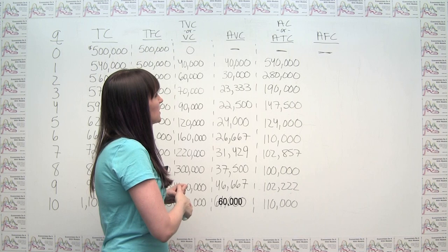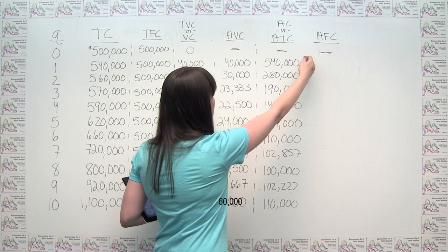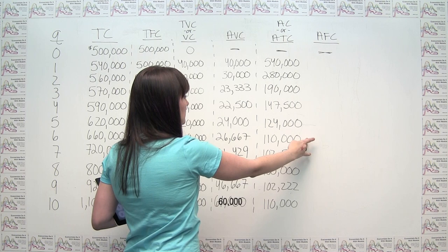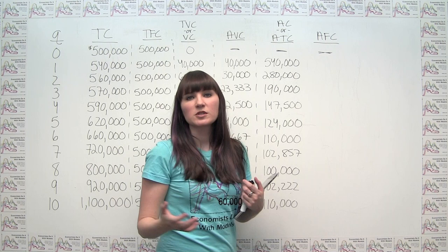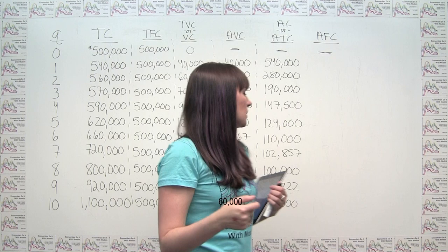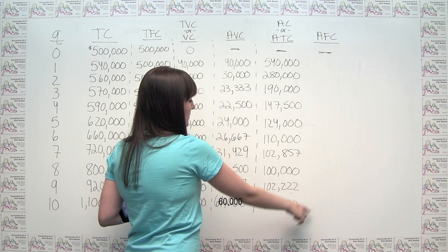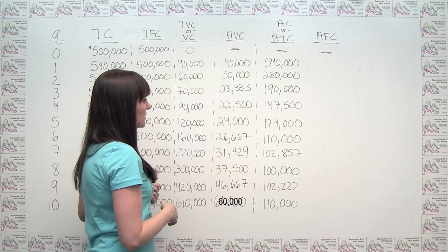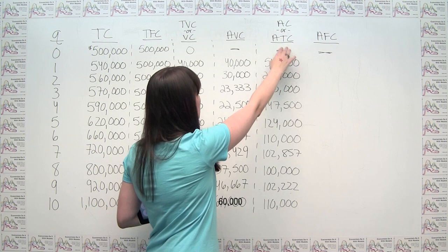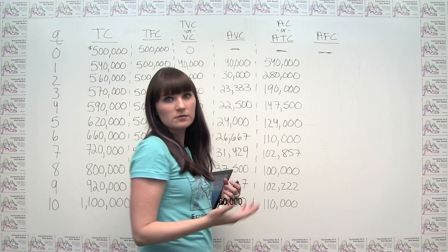Average total cost follows a similar pattern to average variable cost: as we produce more units, our average cost decreases for a while — largely because we're spreading our fixed cost out over more units — but then eventually turns around and starts increasing. You can also notice why AVC and ATC numbers differ so much: ATC takes fixed cost into account, whereas AVC doesn't.